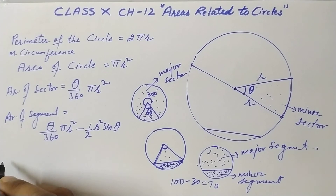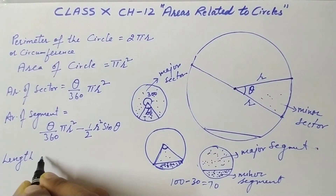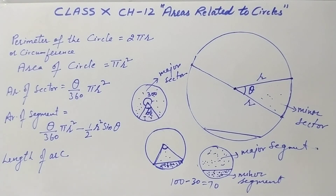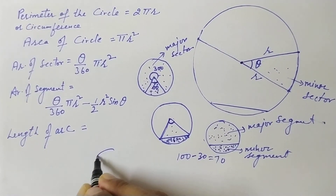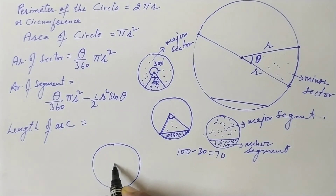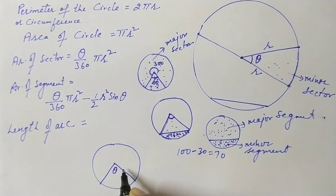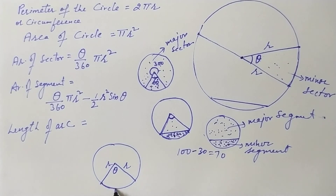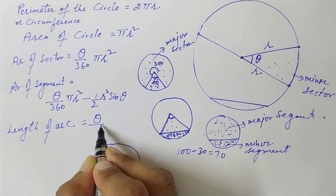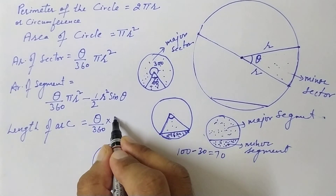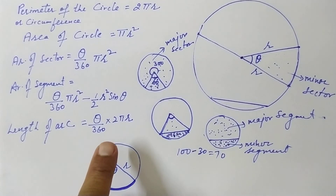Next, how do you find the length of an arc? Suppose I have a sector with angle θ and radius r, and I need to find the length of the arc. The formula is: Length of arc = θ/360 × 2πr.